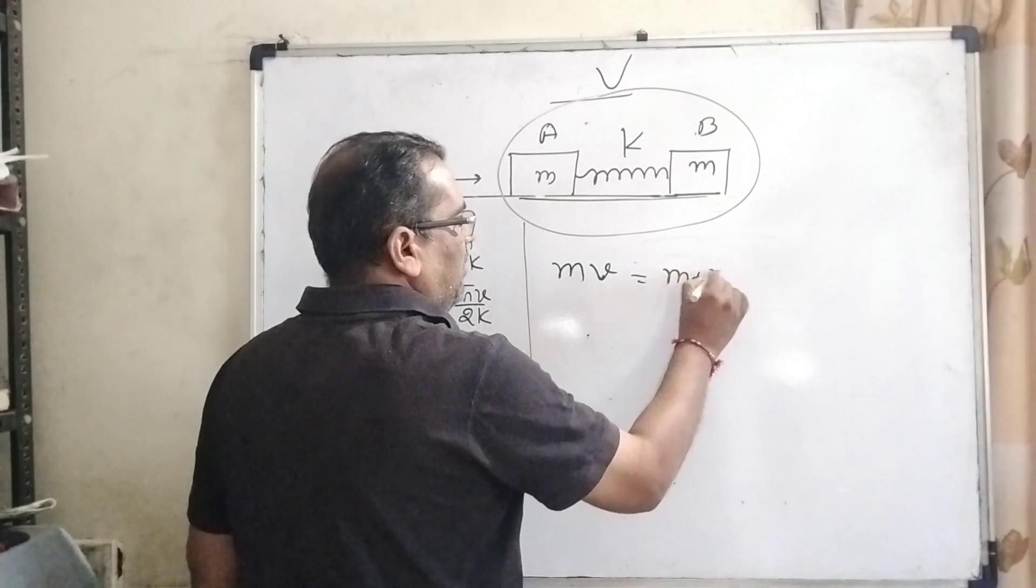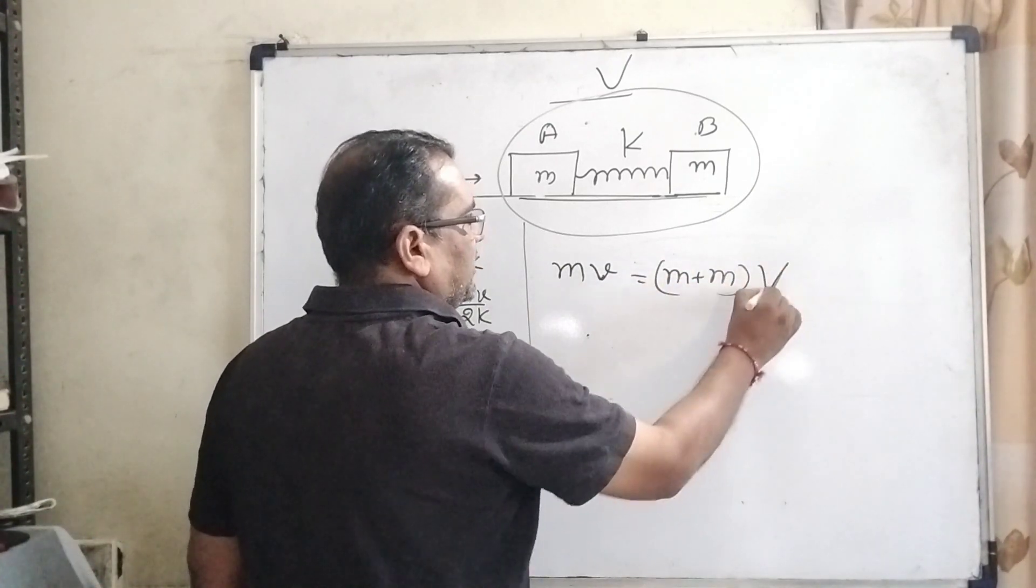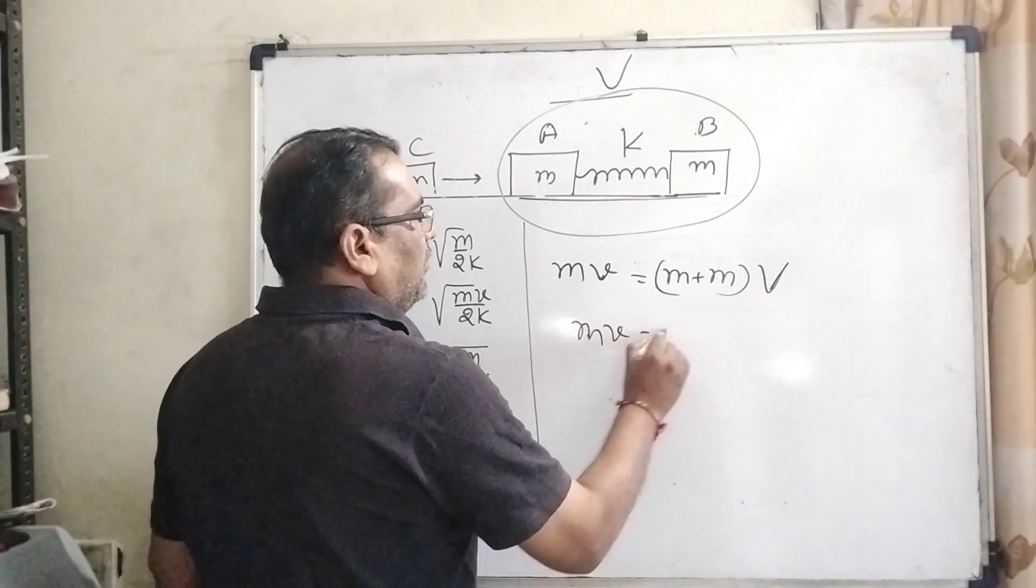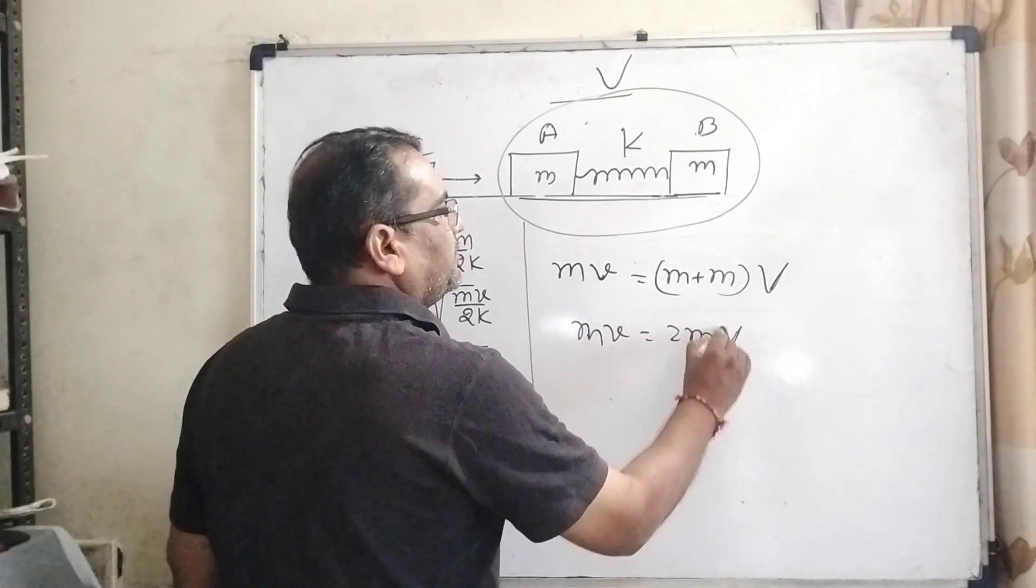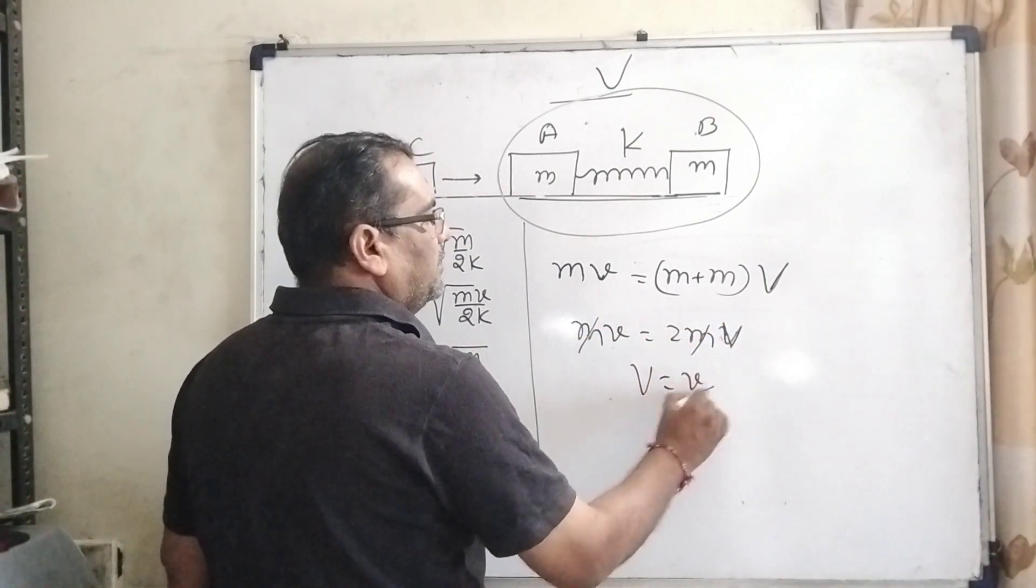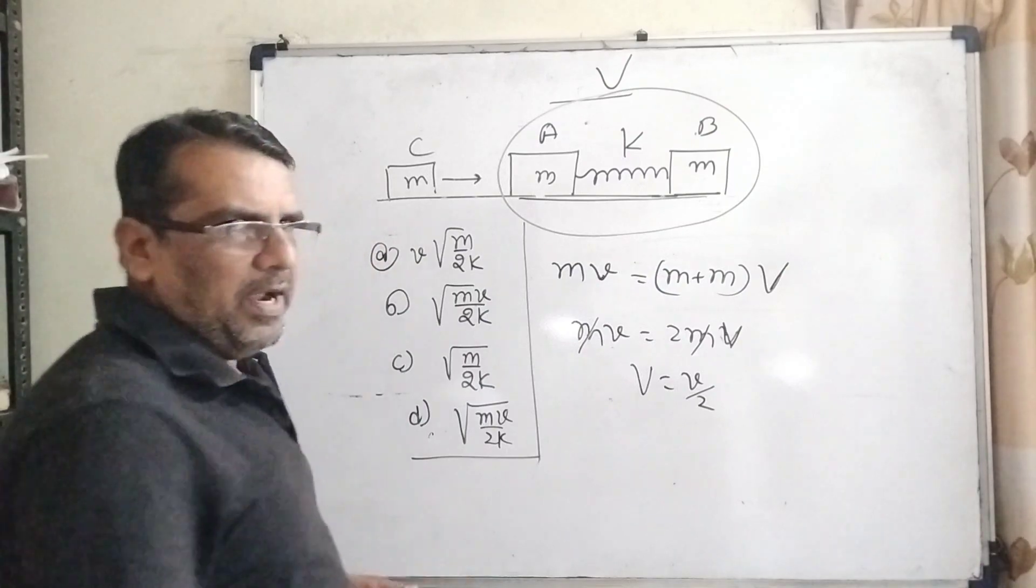So here total mass times velocity V: mv = 2mV. This m cancels out, then V becomes v/2.